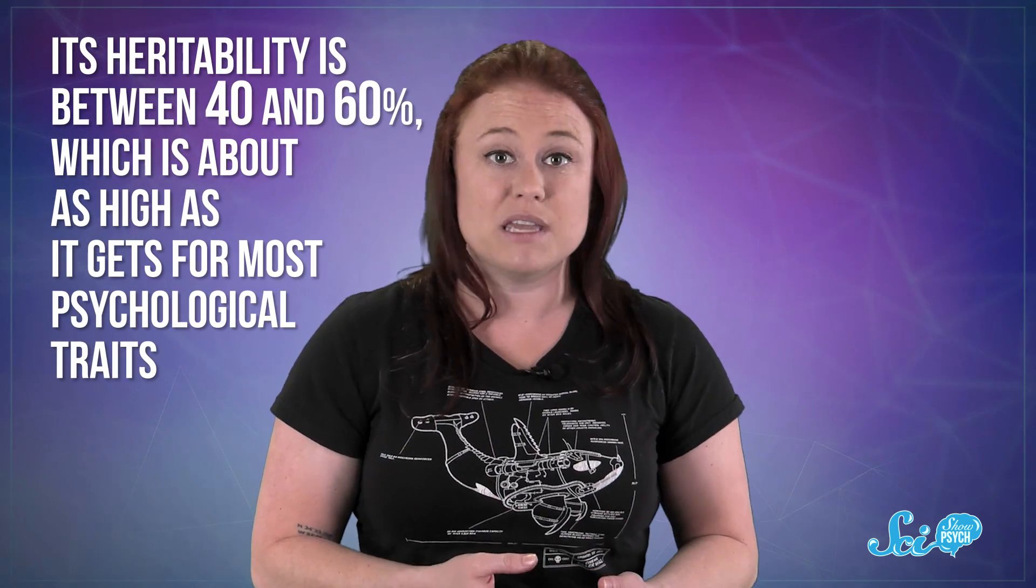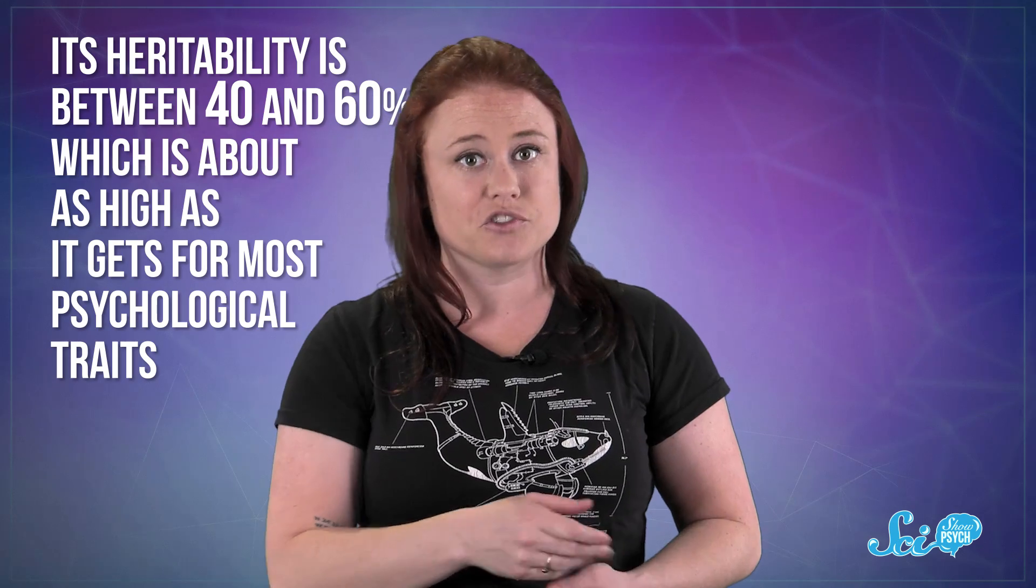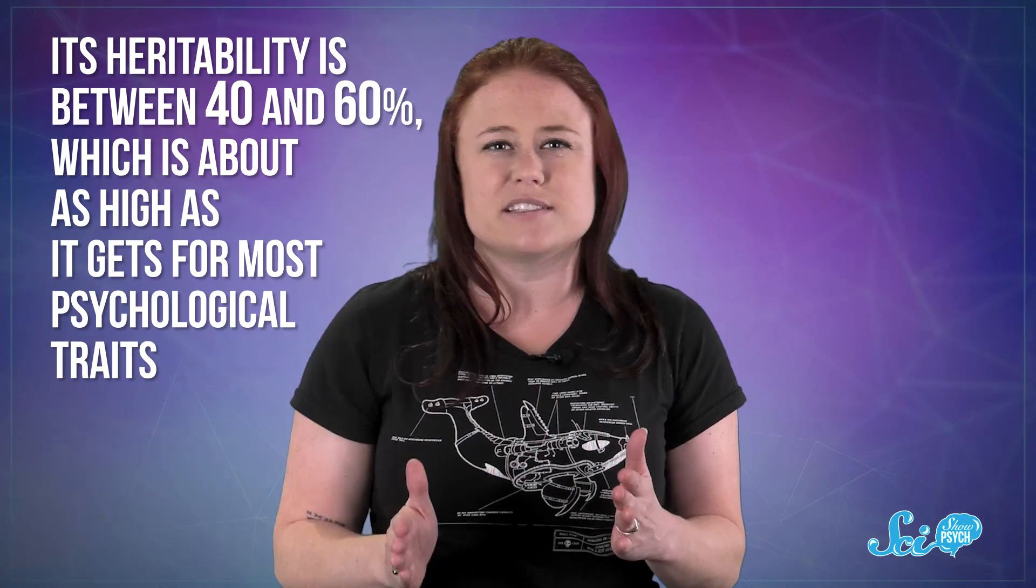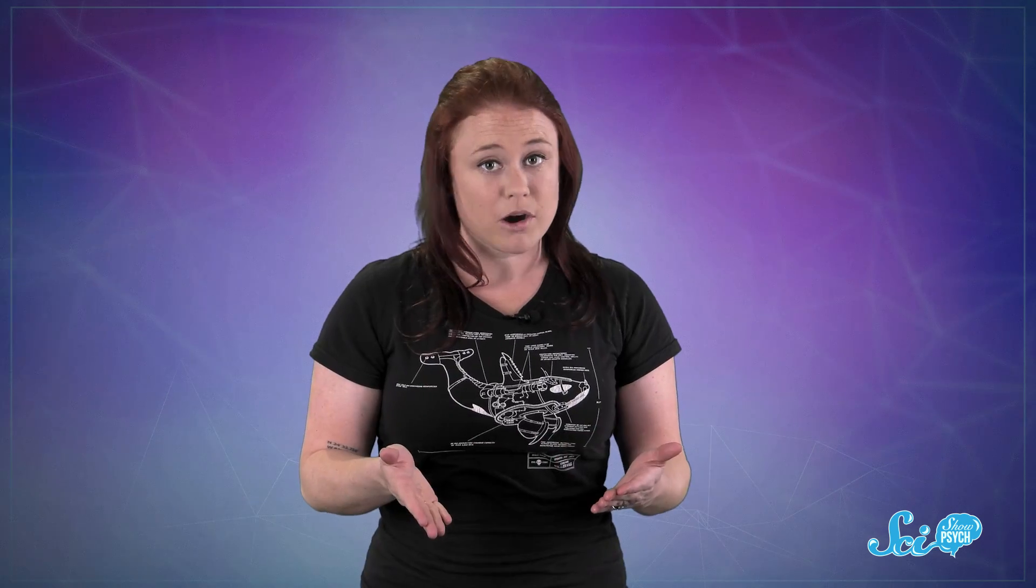Studies have found that there's probably a big genetic component to how sensation-seeking works in different people's brains. Its heritability, meaning how much of the trait comes from nature rather than nurture, is between 40 and 60 percent, which is about as high as it gets for most psychological traits. One part of the limbic system, called the nucleus accumbens, seems to be more active in people with higher sensation-seeking.